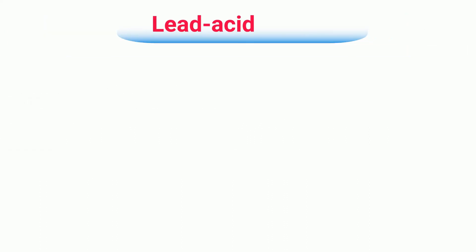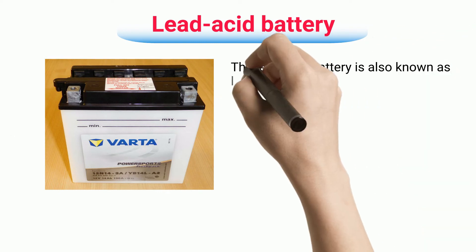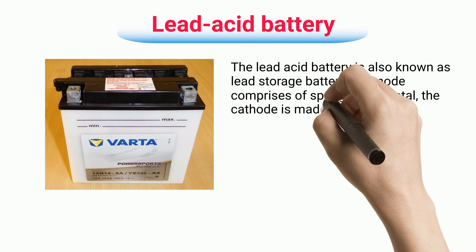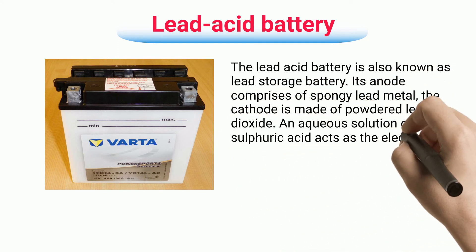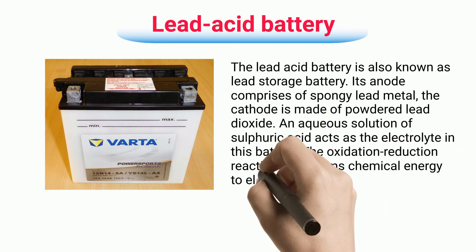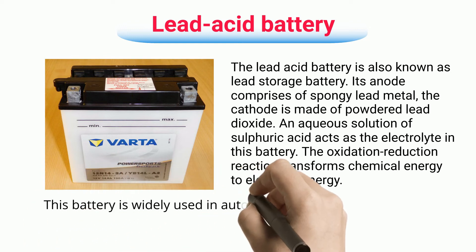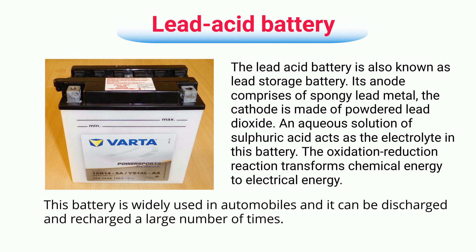The lead acid battery, also known as the lead storage battery, has an anode comprising spongy lead metal and a cathode made of powdered lead dioxide. An aqueous solution of sulfuric acid acts as the electrolyte. The oxidation-reduction reaction transforms chemical energy to electrical energy. This battery is widely used in automobiles and it can be discharged and recharged a large number of times.